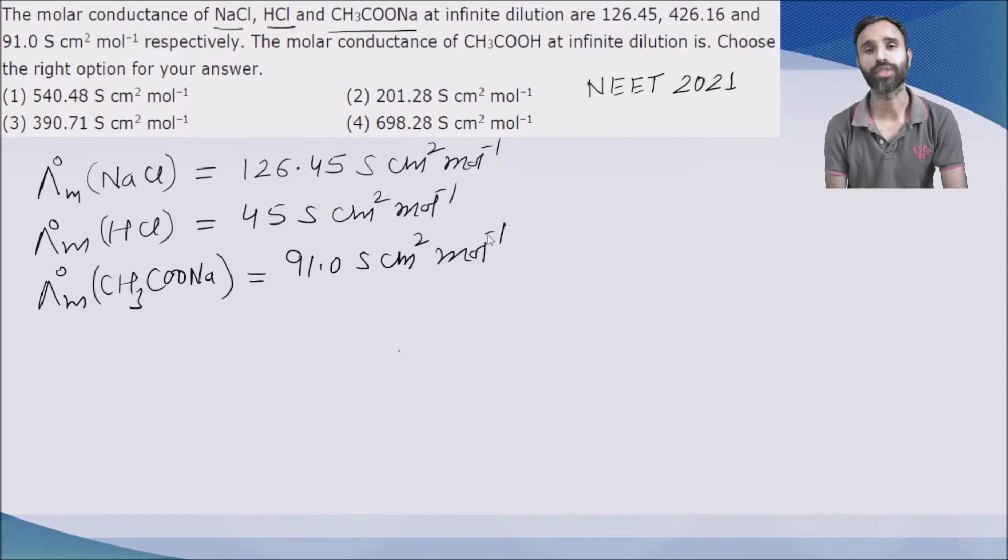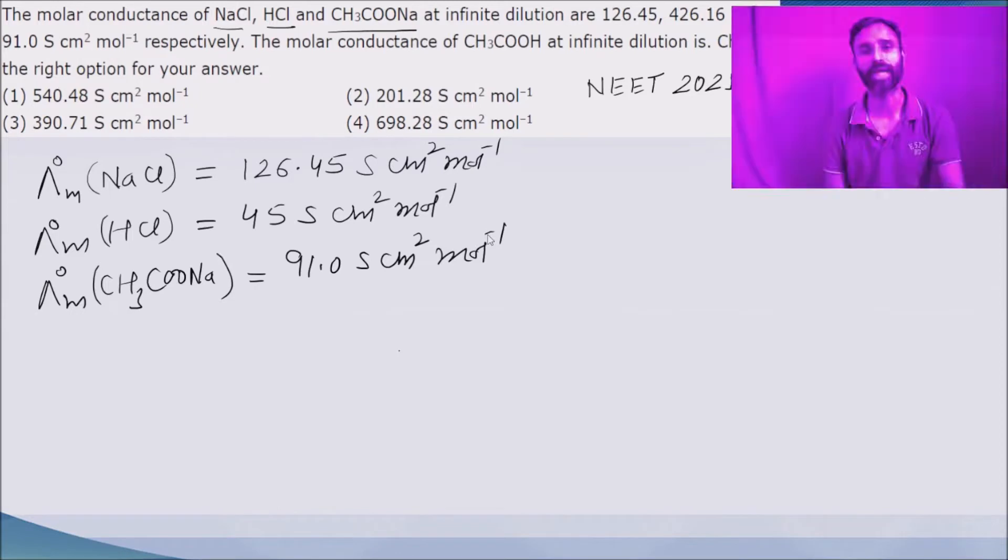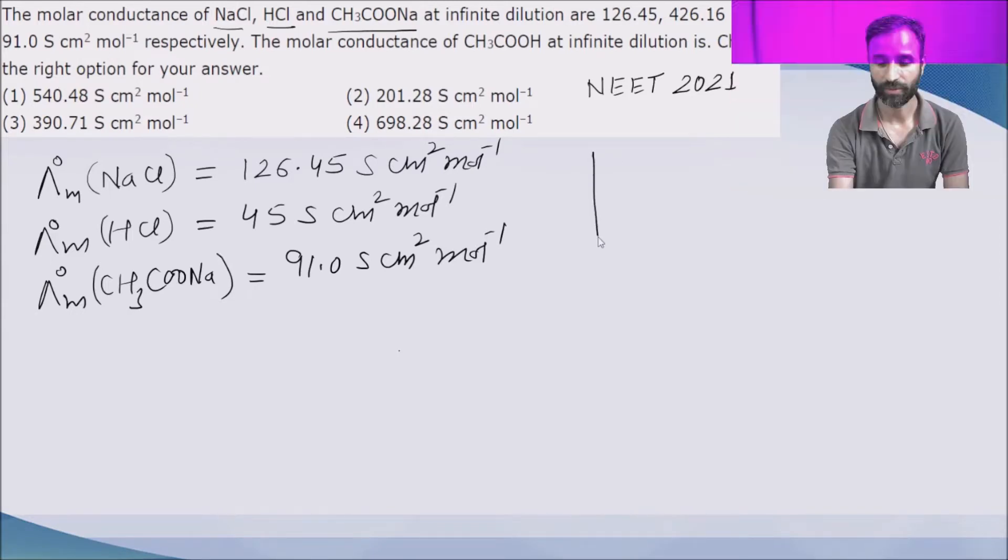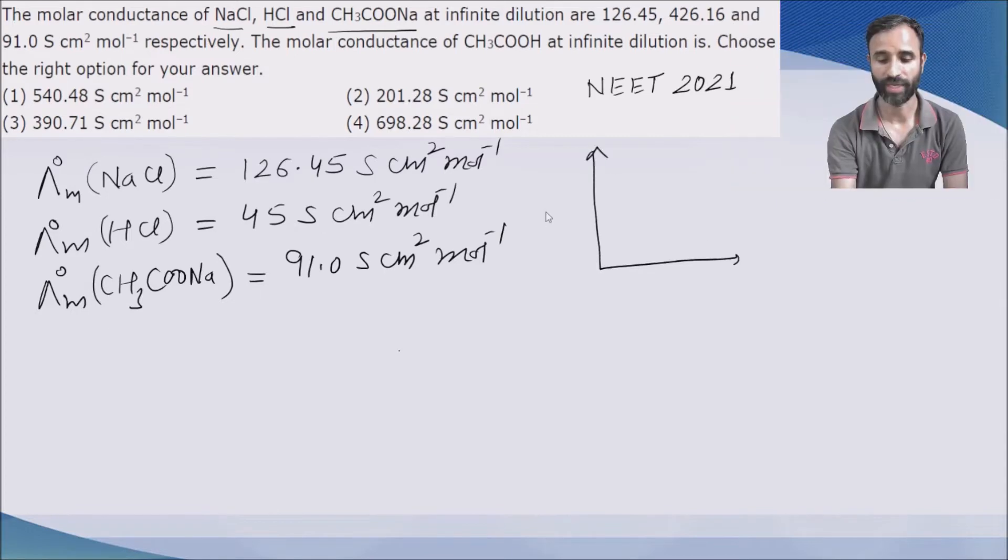So their values, lambda m0, can be calculated by extrapolation of this graph. You know, by Debye-Hückel equation, lambda m versus square root of c, like this. So we can calculate lambda m0 for all of them.